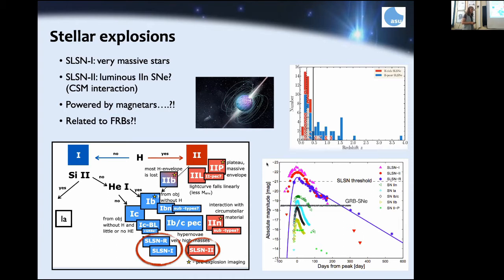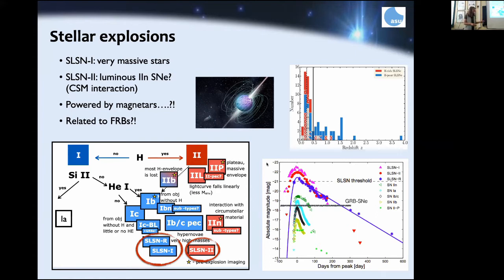Despite their luminosity, superluminous supernovae are not detectable as far out as GRBs. GRB-supernovae are actually rather difficult to detect above redshift 0.8. With GRBs, we detect the gamma radiation from the jet, so we can detect those from much farther out in the universe. Superluminous supernovae above redshift one are also difficult, but they are very interesting objects.